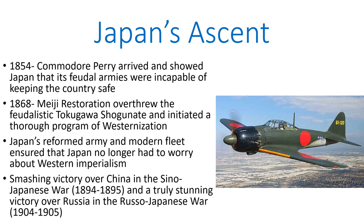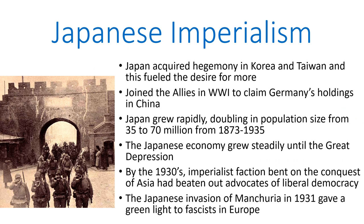Japan first announced its modernity on the international scene when it won a smashing victory over China in the Sino-Japanese War from 1894 to 1895, mostly fought in Korea. But the thing that really stunned the world and let them know that Japan was not to be trifled with was when the Japanese won a crushing victory over Russia in the Russo-Japanese War of 1904 to 1905. This involved the Japanese fleet effectively sinking almost an entire squadron of the Russian navy — something that also helped to destabilize Russia and undermine the Tsar's credibility. Prior to World War I, Japan had achieved hegemony in Korea and Taiwan, and all this did was fuel the desire for more empire.